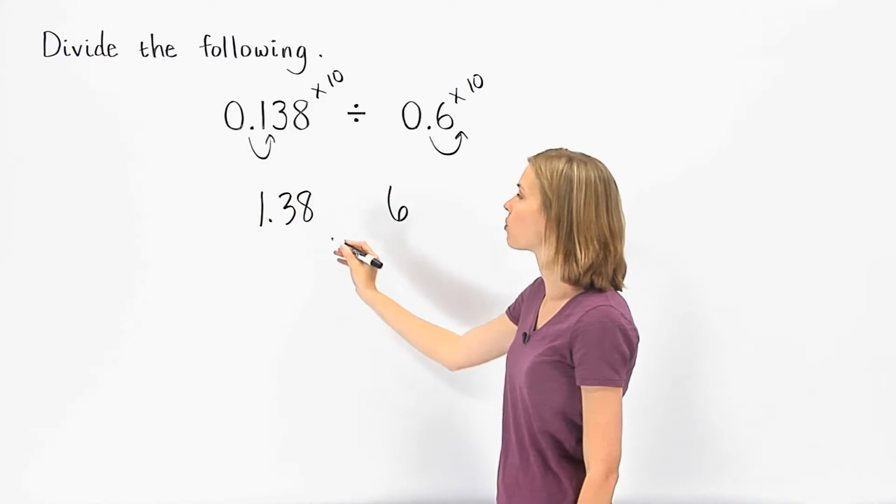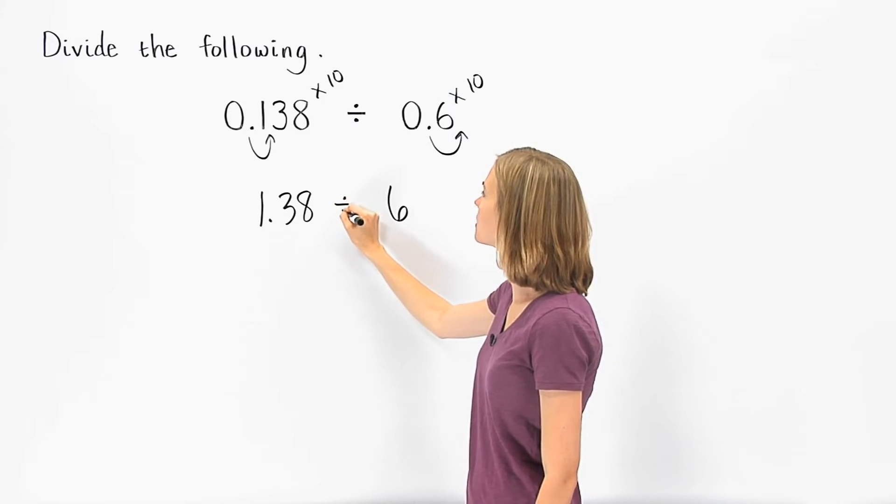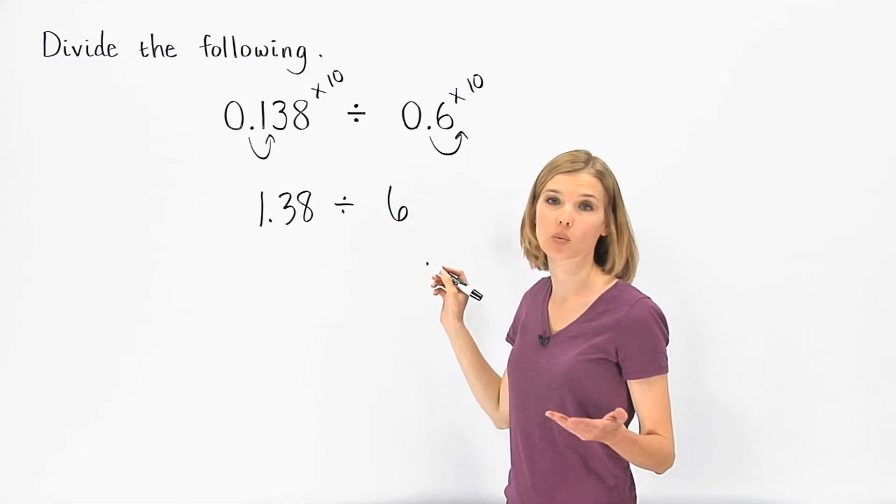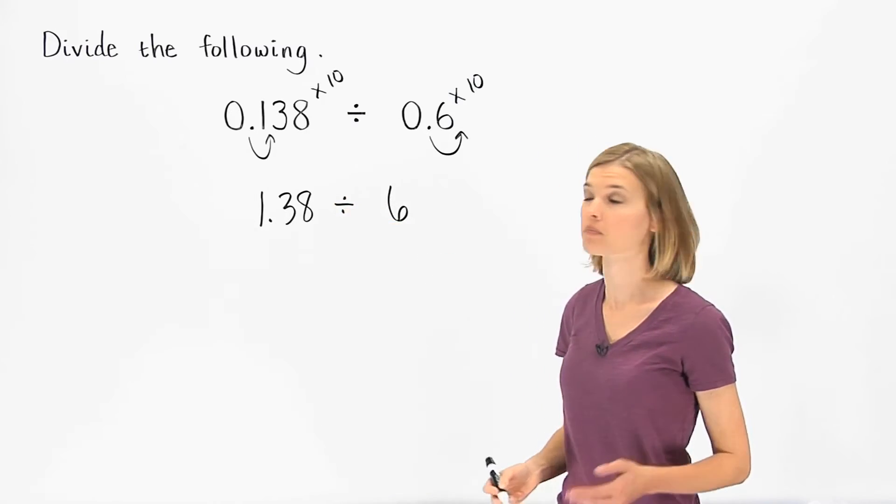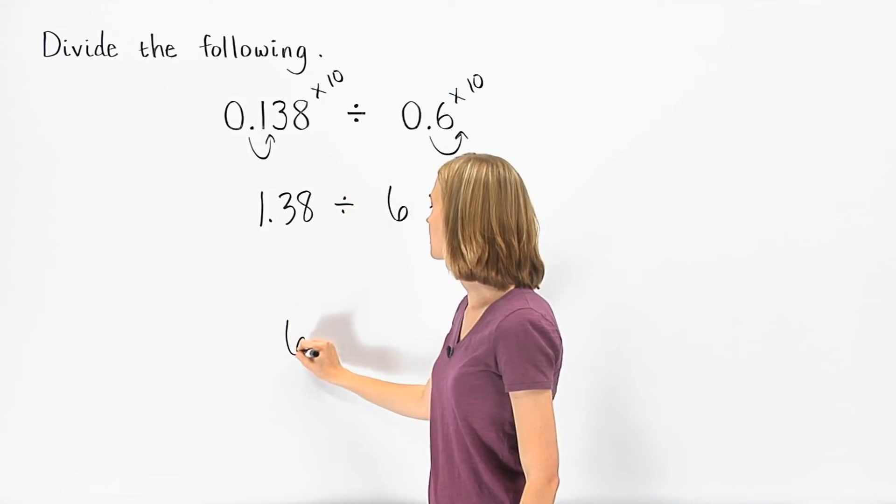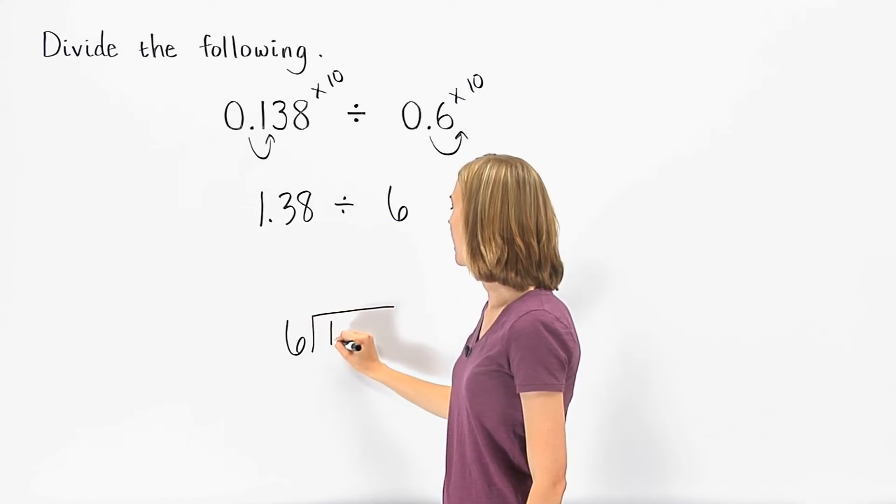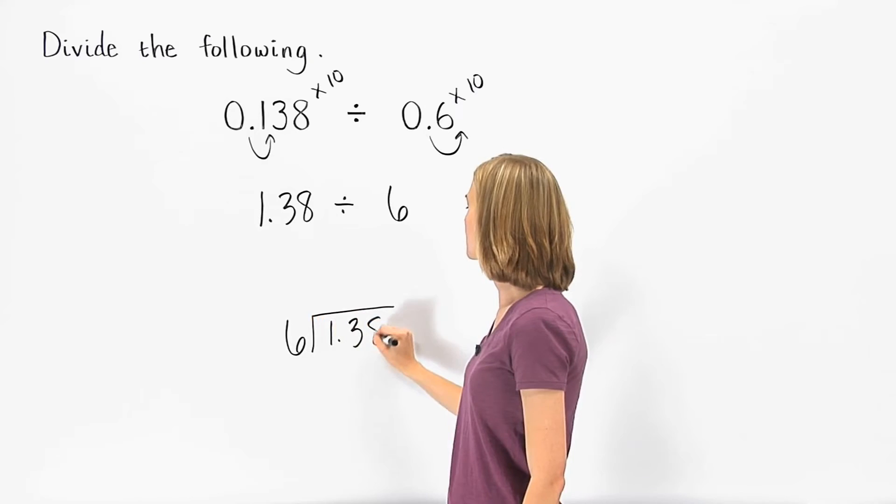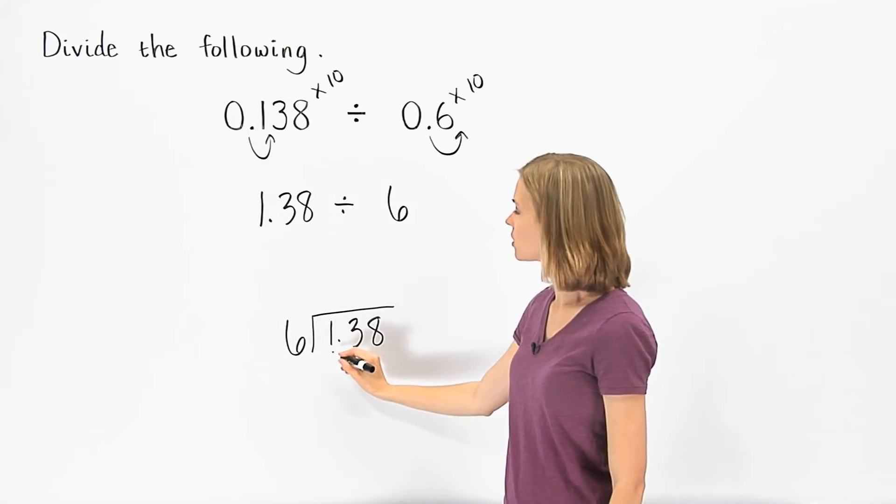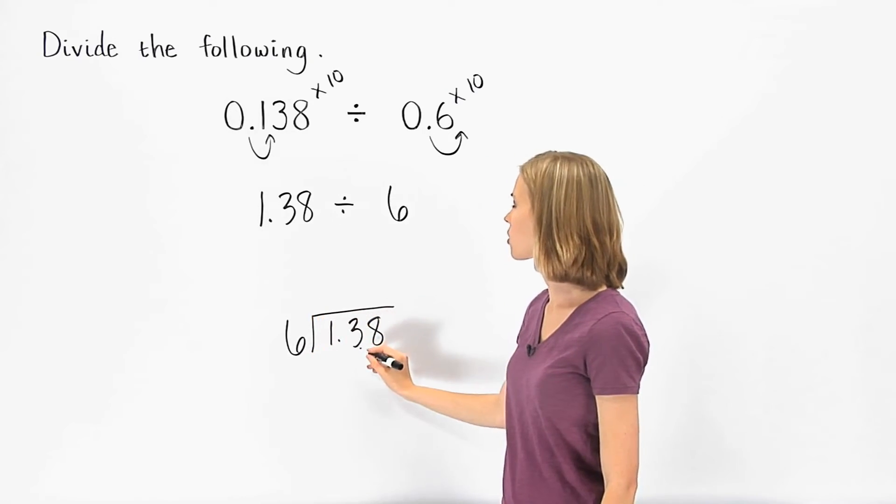Now we have 1.38 divided by 6, which looks just like the problems in the previous section. So we divide 6 into 1.38. 6 doesn't divide into 1, so we divide 6 into 13.